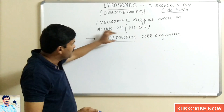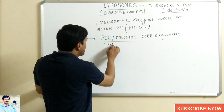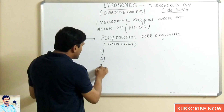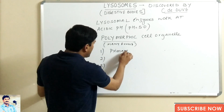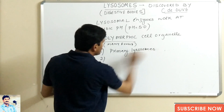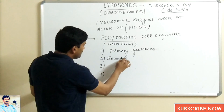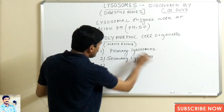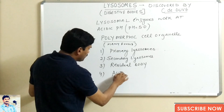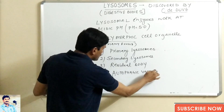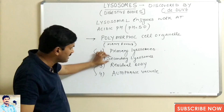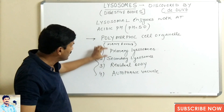Lysosomes are also called polymorphic cell organelles. 'Poly' means many, 'morphic' means forms — they have many forms. To justify this, lysosomes are of four categories: number one, primary lysosomes; number two, secondary lysosomes; number three, residual bodies; and number four, autophagic vacuoles.